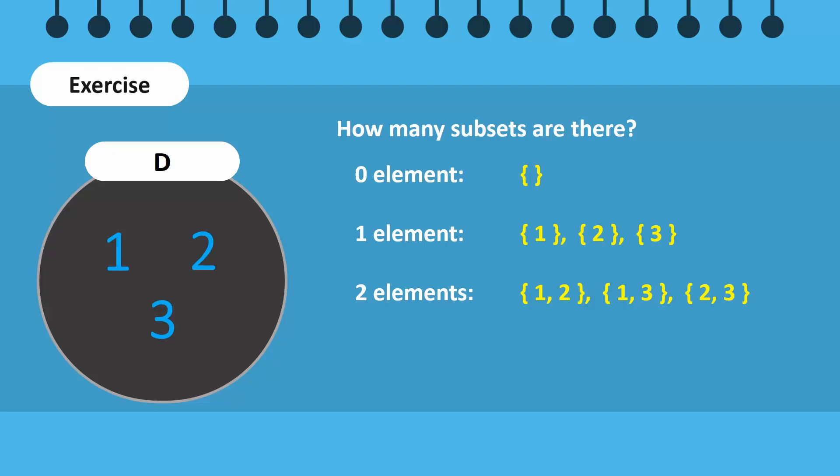Finally, the largest subset contains 3 elements. There is only one possible subset for this, which is actually set D itself. Altogether, set D has 8 subsets. The larger the set is, the more subsets it will have.